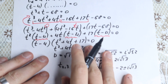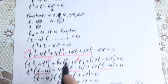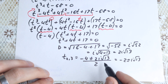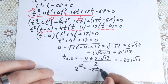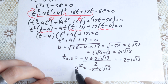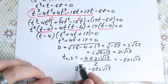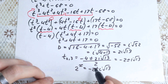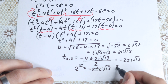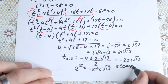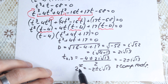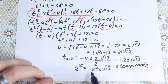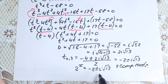Going back to our substitution, 2^x = t, but t equals this complex expression, so 2^x equals minus 2 plus or minus i times square root of 13. We will have two complex roots here, because we have i — so for 100 percent, these will be complex numbers.